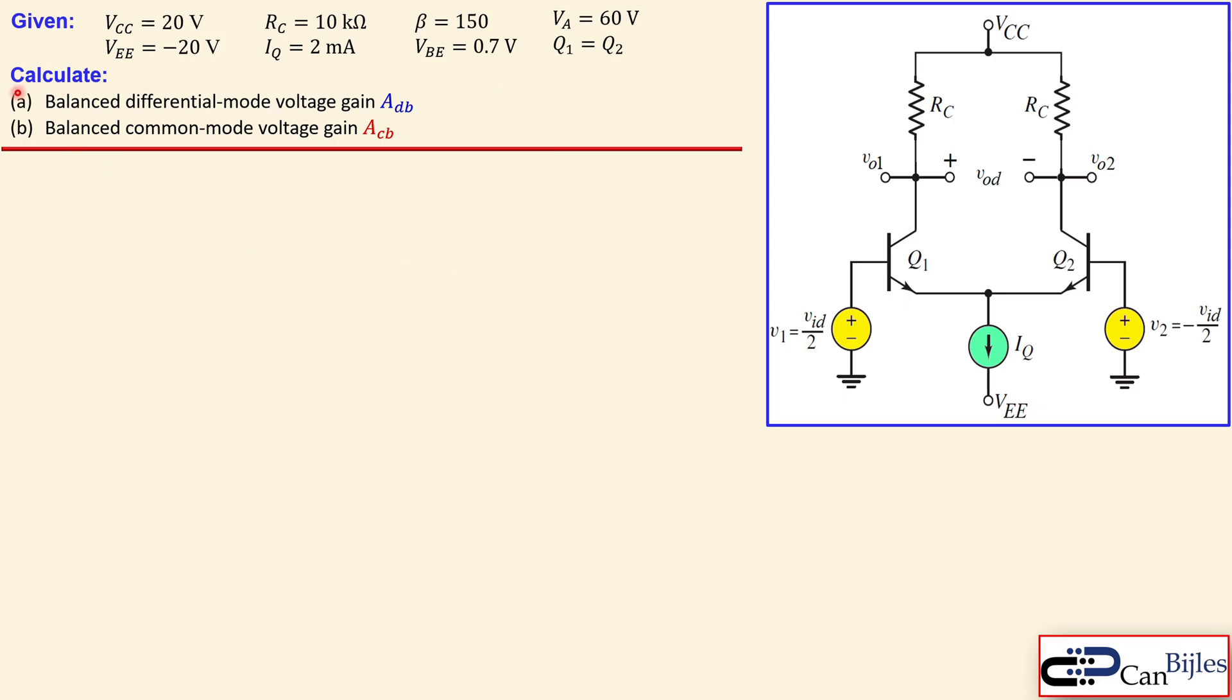What we would like to calculate is the following. We have two questions: the balanced differential mode voltage gain, and the second one is the balanced common mode voltage gain. What does balanced mean? Balanced means that you look at both outputs, so you measure the difference between these two, and if you have single ended, then you measure only at this node or that node with respect to ground. That is the difference between balanced and single ended. You can also use double ended instead of balanced.